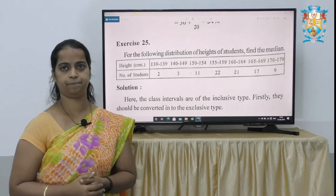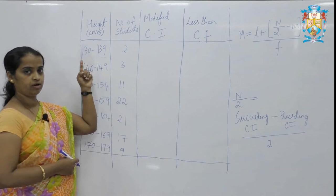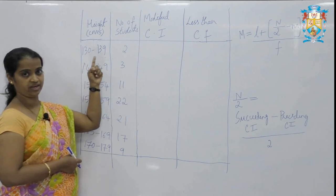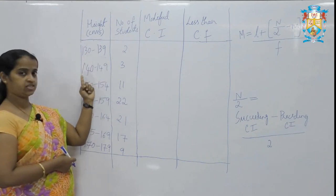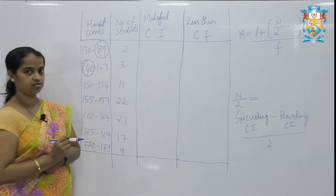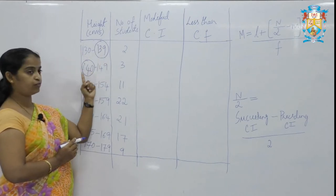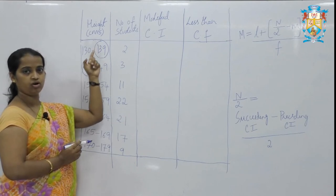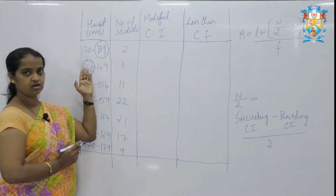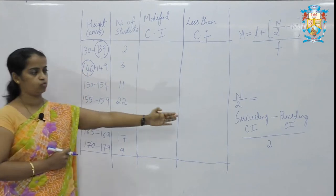This is the problem of median. Here is the solution. This problem is in inclusive type. What is inclusive type? When the class interval is given as 130 to 139, next 140 to 149 — there is a gap in the class interval. The class interval should be the same, like 130 to 140 and 140 to 150; in that case the problem would be called exclusive. But this problem is in inclusive type.